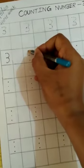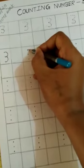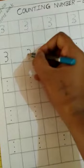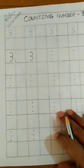Okay. 3. Number 3. How to join? From top to here. Between to here. Like this. 3. It is a counting number 3.